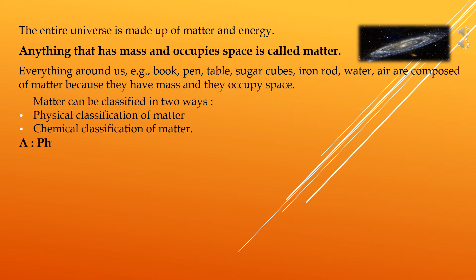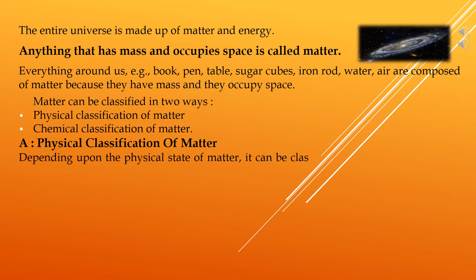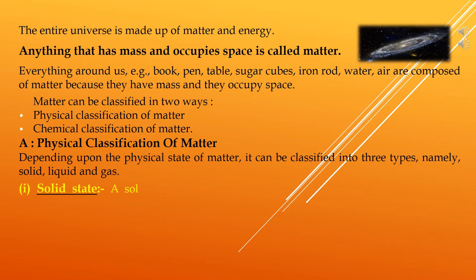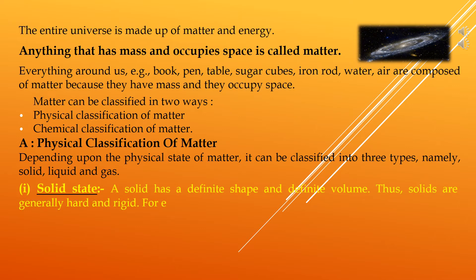First, we discuss the physical classification of matter. Depending upon the physical state of matter, it can be classified into three types: namely solid, liquid, and gas. All substances around us can be classified by using one or more senses. The first is the solid state — a solid has a definite shape and definite volume, and solids are generally hard and rigid.